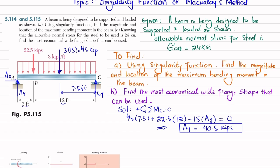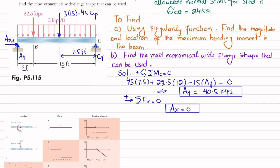Now we find Ax using the equilibrium equation: the sum of all forces along the x-direction equals zero. There is no other horizontal force, so Ax = 0. Then, using vertical equilibrium: Ay (40.5) minus 22.5 minus 45 plus Cy = 0, giving Cy = 27 kips.